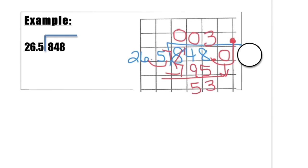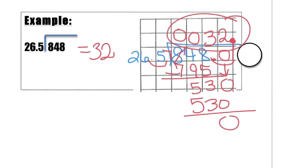Then we should come over here and bring down our 0. How many times will 265 go into 530? That will be 2 times. 2 times 265 happens to be 530. And we get 0 left over.